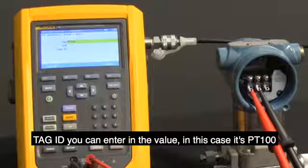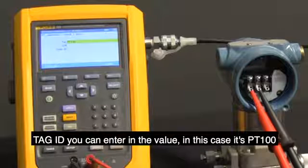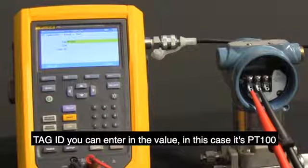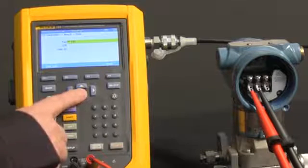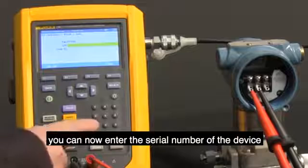Tag ID is, you can enter in the value, in this case it's PT100. If you move down to seal number, you can now enter the seal number of the device.